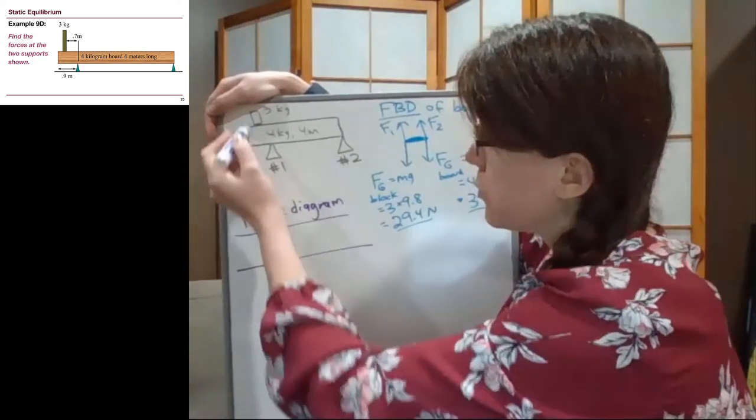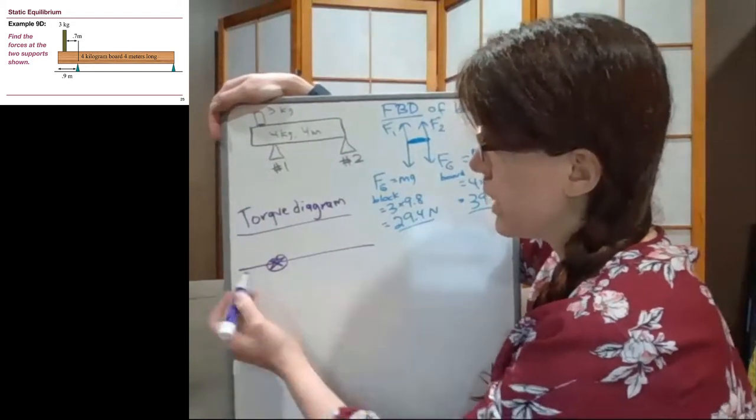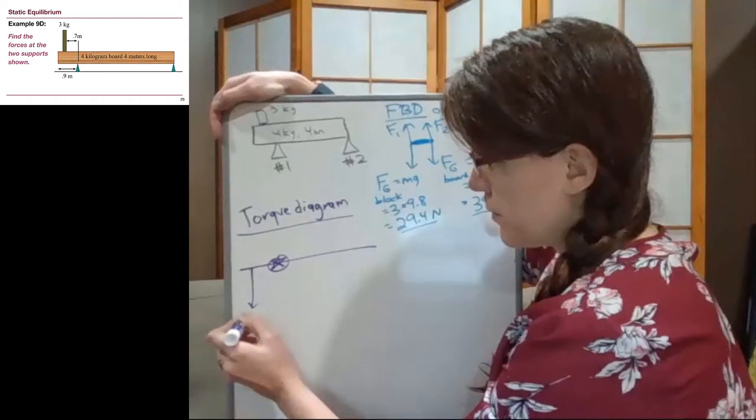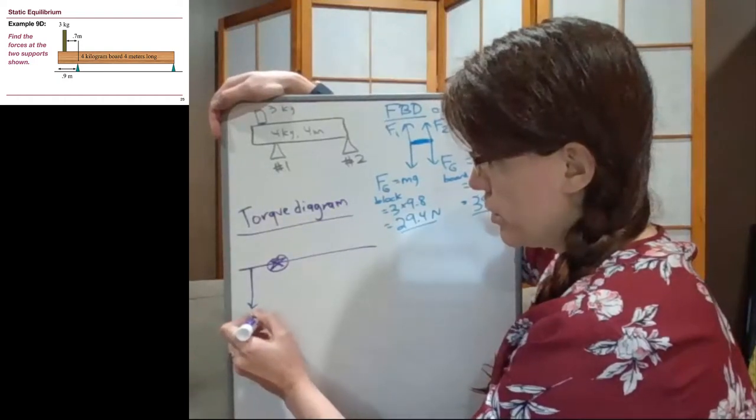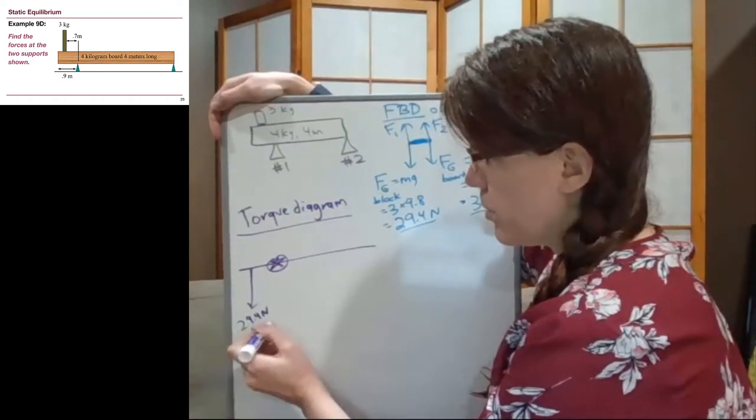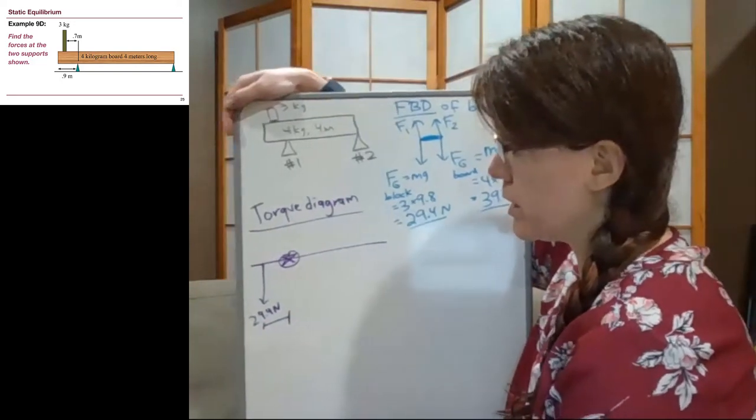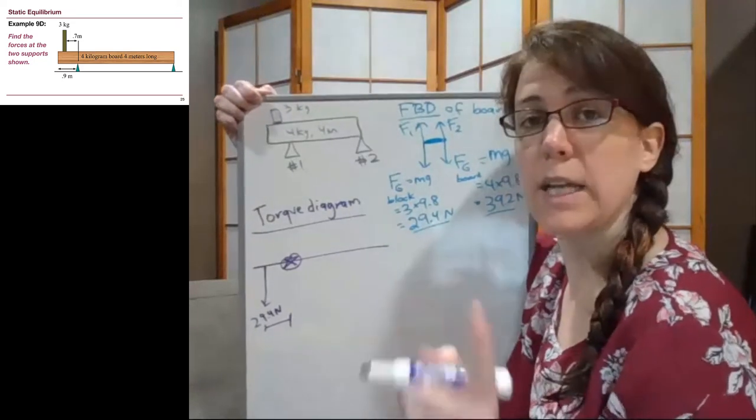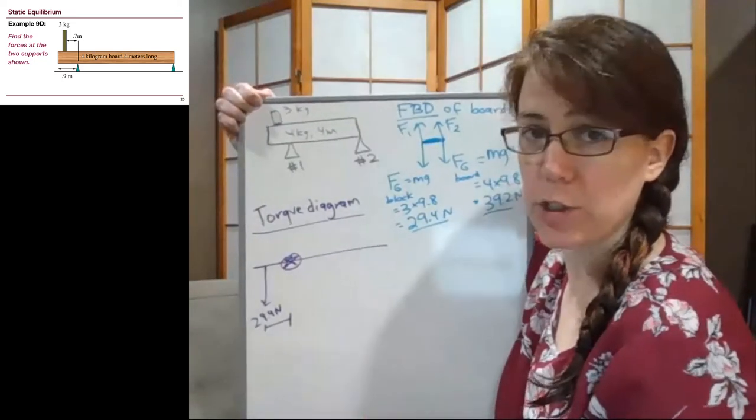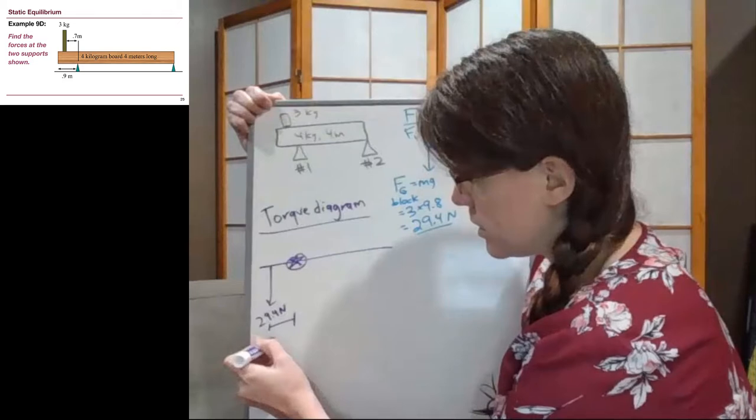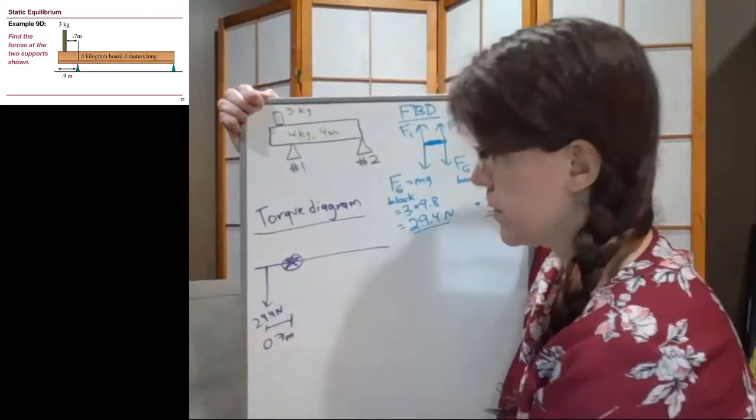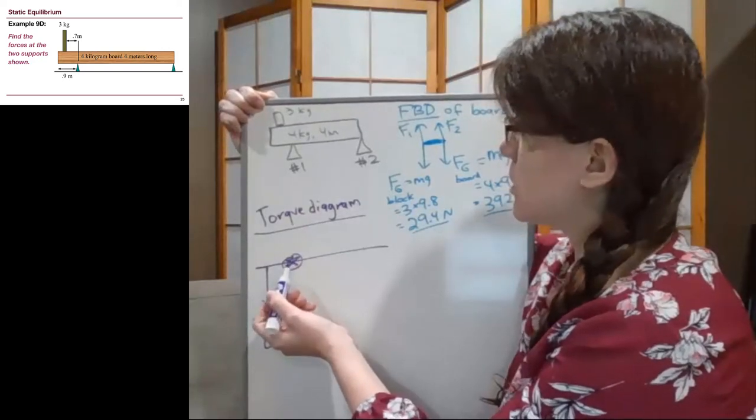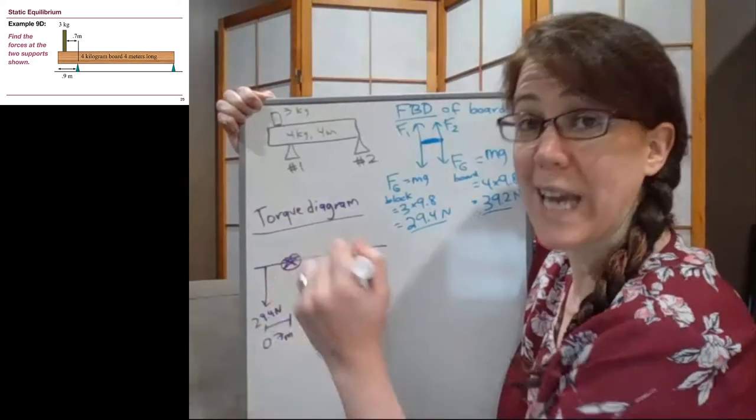Okay, so the first force that we get to going from left to right is the three kilogram block, which is a 29.4 newton force. And while I'm here, I'm going to write down the distance to the axis that we chose. And if we look at our slide, our picture, we have been given that distance of 0.7 meters. As I continue along, this is a force, it's the support one, but because it's a force at the axis, I don't draw anything.